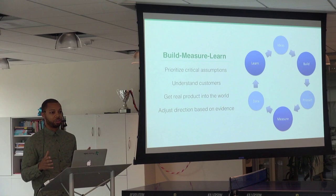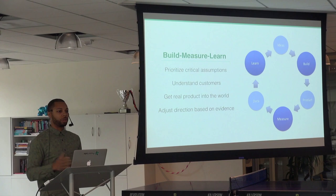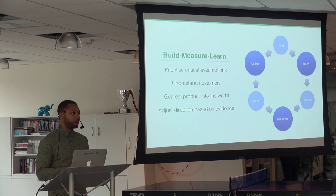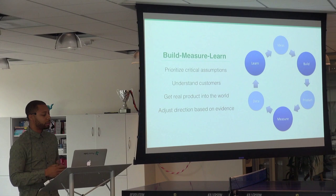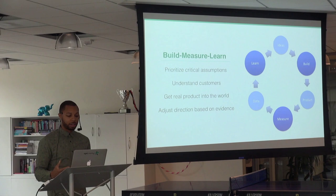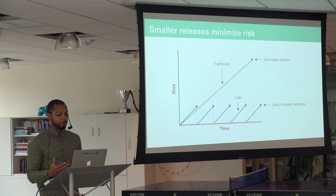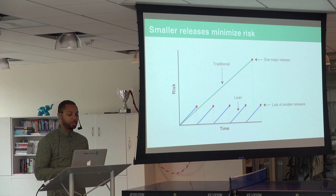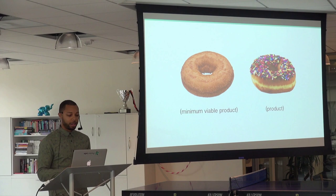Traditional product development is very linear, waiting to release product to customers until far down the lifecycle. In the lean startup we want to go through a continuous loop of learning and iterating until we get to a product customers actually want. You start with prioritizing critical assumptions around your ideas, getting to understand your customers, getting a real product in front of them, and then adjusting direction based on actual evidence as opposed to opinions. In the lean approach we want smaller releases, consistently de-risking the product through this cycle of continuous learning.